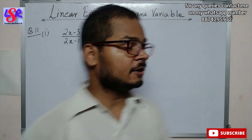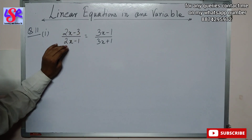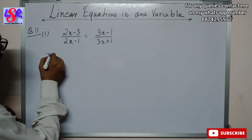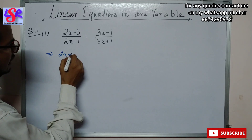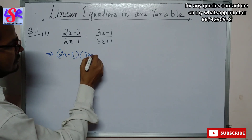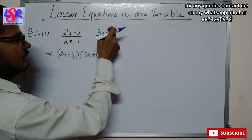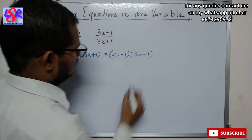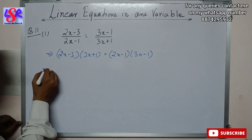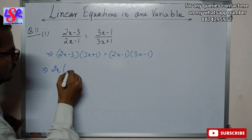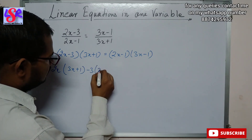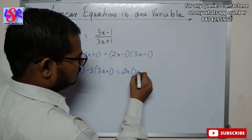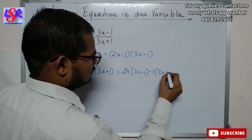Now let's see question number 11, first part. Here we have (2x - 3)/(2x - 1) = (3x - 1)/(3x + 1). Cross multiplying: (2x - 3)(3x + 1) = (2x - 1)(3x - 1). Opening brackets: 2x(3x + 1) - 3(3x + 1) = 2x(3x - 1) - 1(3x - 1).